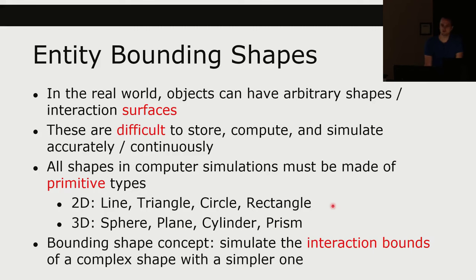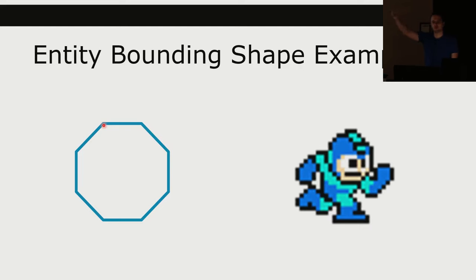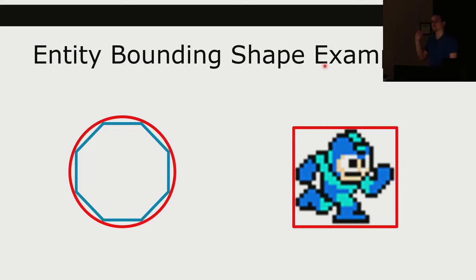In this course, we're going to talk about just a simple bounding shape concept: we are going to simulate the interaction bounds of a complex shape with a simpler one. For example, in assignment 2, we have an octagon. You can think about having to detect if an octagon truly interacts with something else — you'd have to detect if each of its sides collide with each of the other sides, or maybe each of the points lie within another polygon.